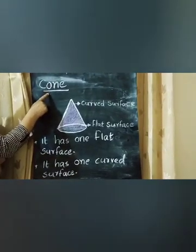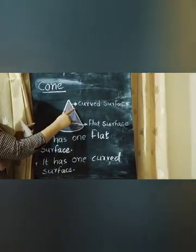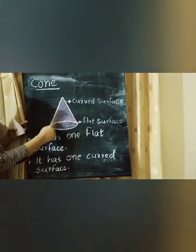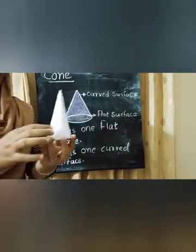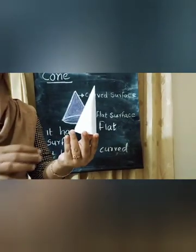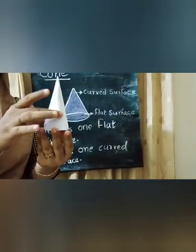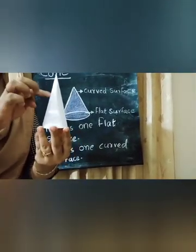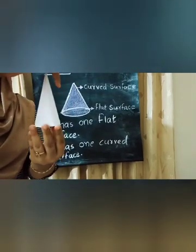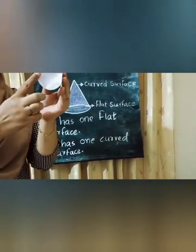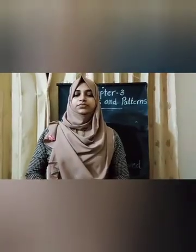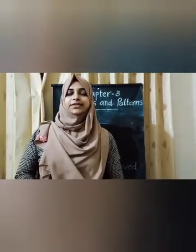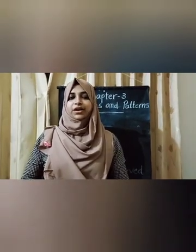Next step — Cone. A Cone has 1 curved surface and 1 flat surface. It is a Cone shape — it has 1 curved surface and 1 flat surface. A bird's head and a Cone ice cream are examples of a Cone.